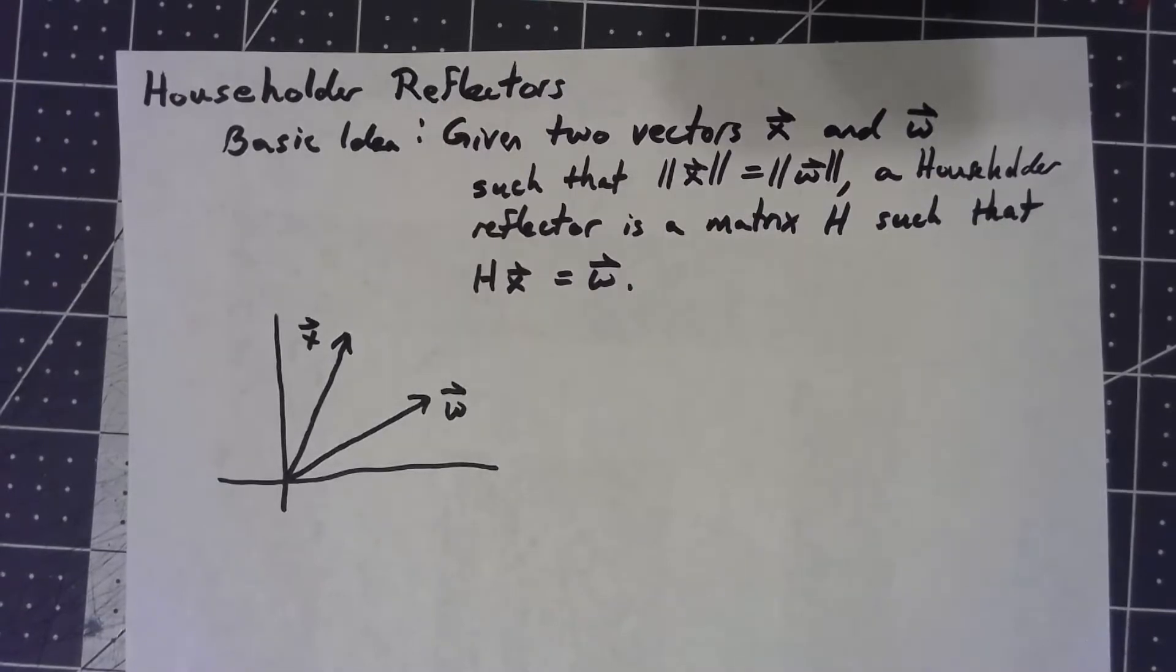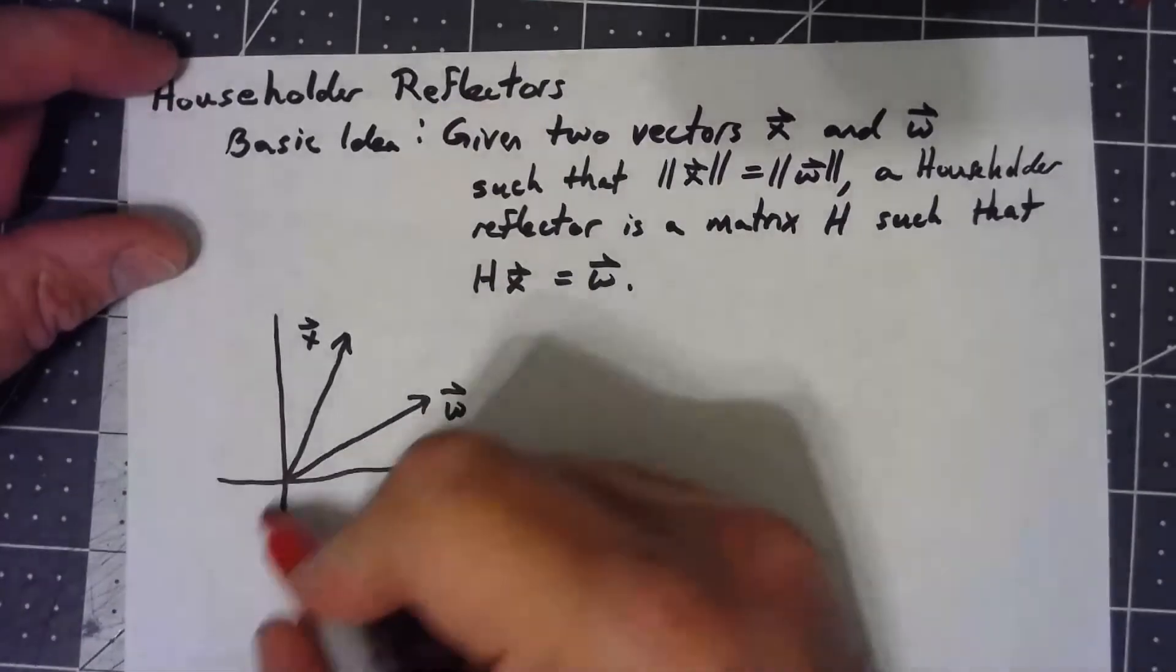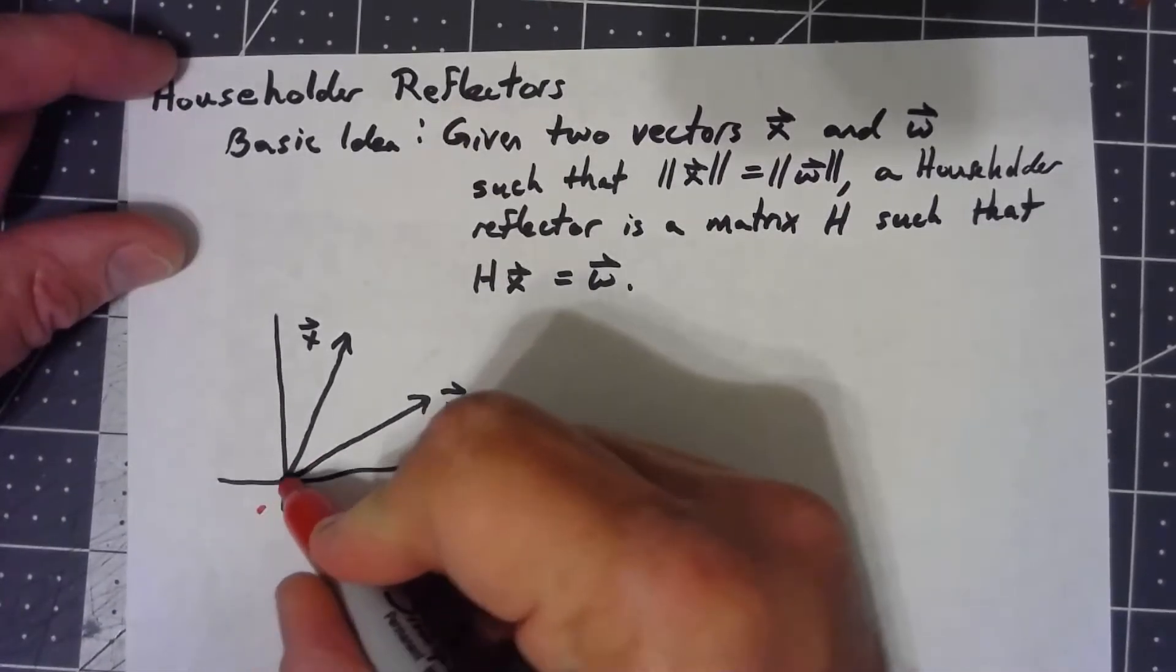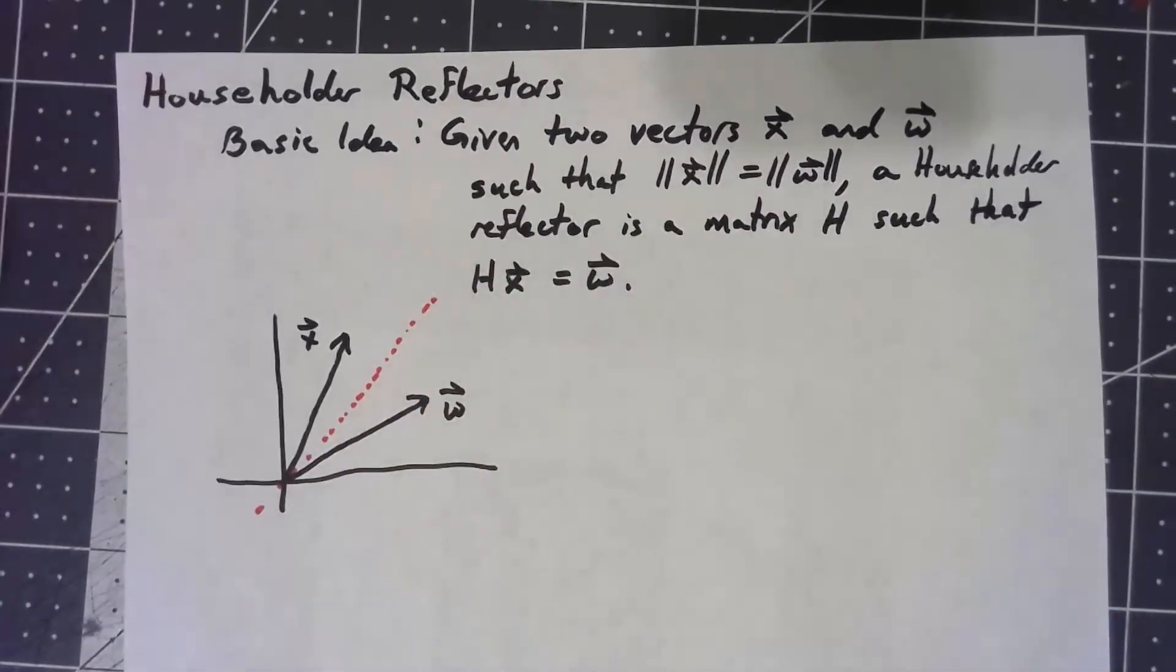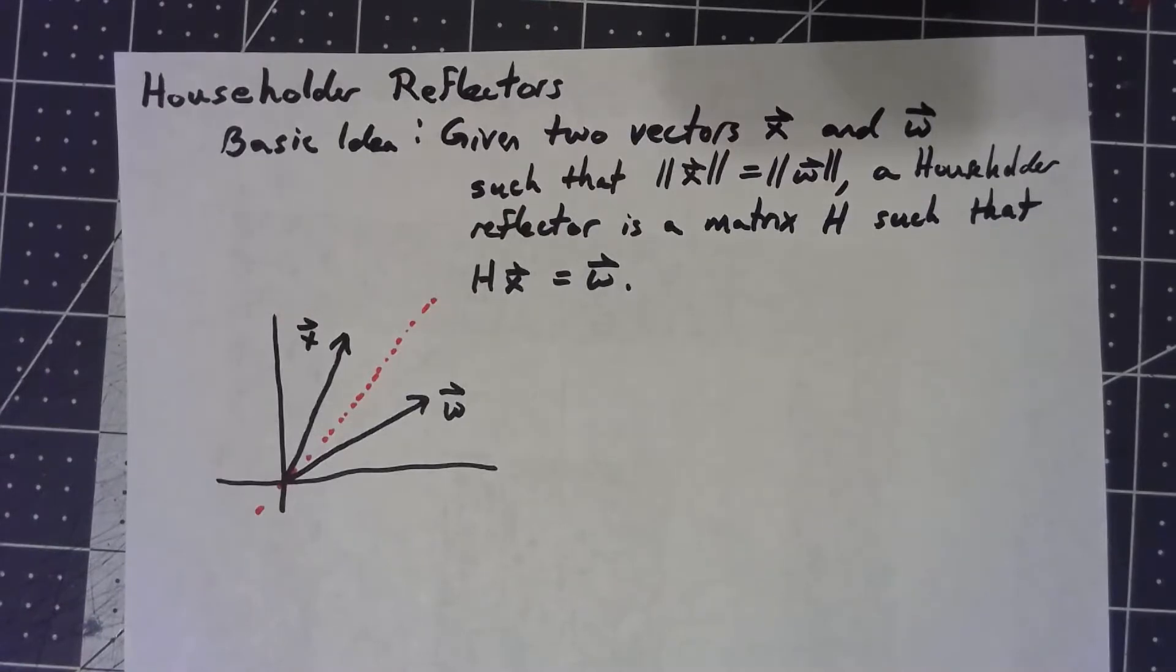Now we did a bunch of proofs with this when we first introduced the idea. I'm not going to redo those proofs, but let's talk about it a little bit geometrically. Visually it's easy to see that what we want to do is reflect across that sort of bisecting line there, but how do we set that up?